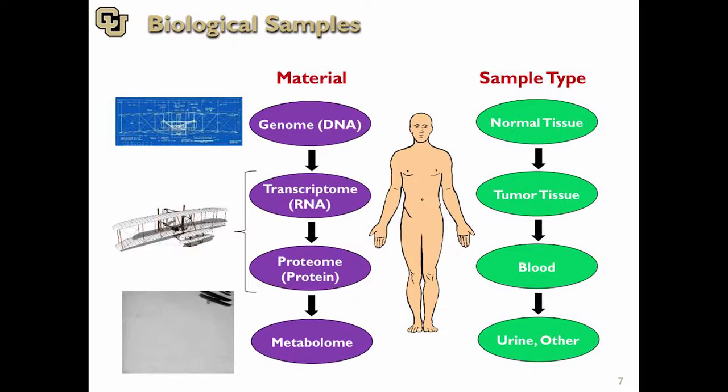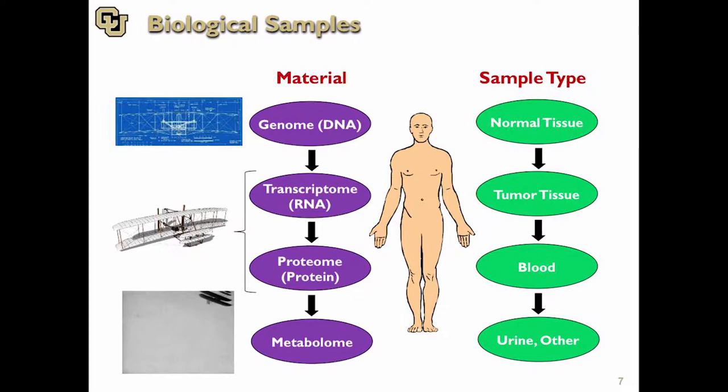The sample types that we can process are, in urology: urine, renal cancers, blood, tumor tissue, and importantly, normal tissue.